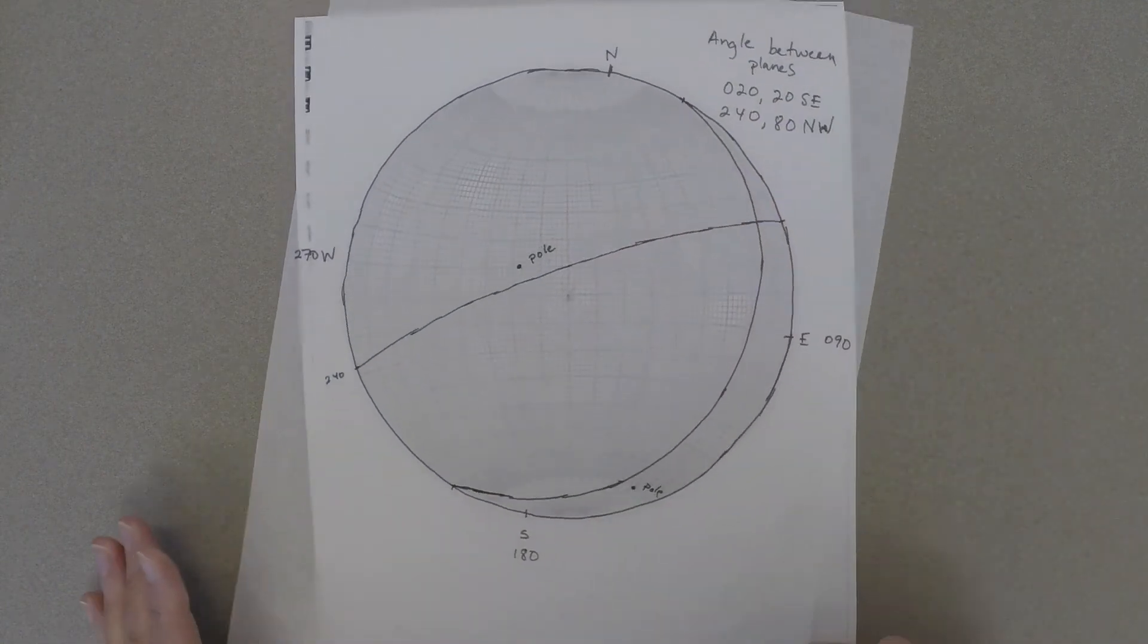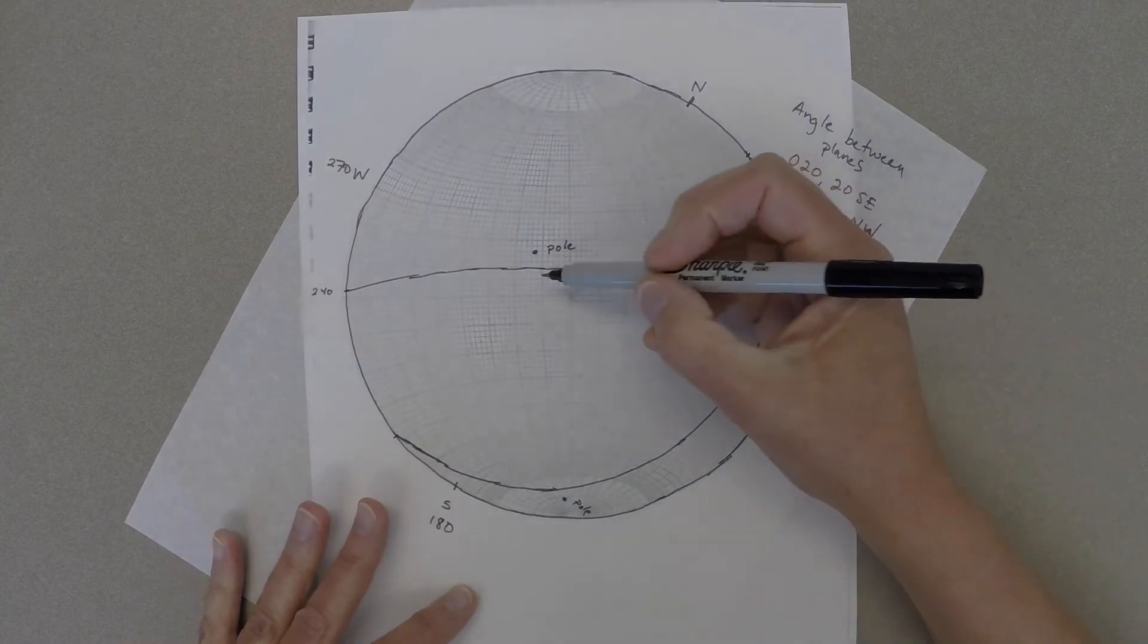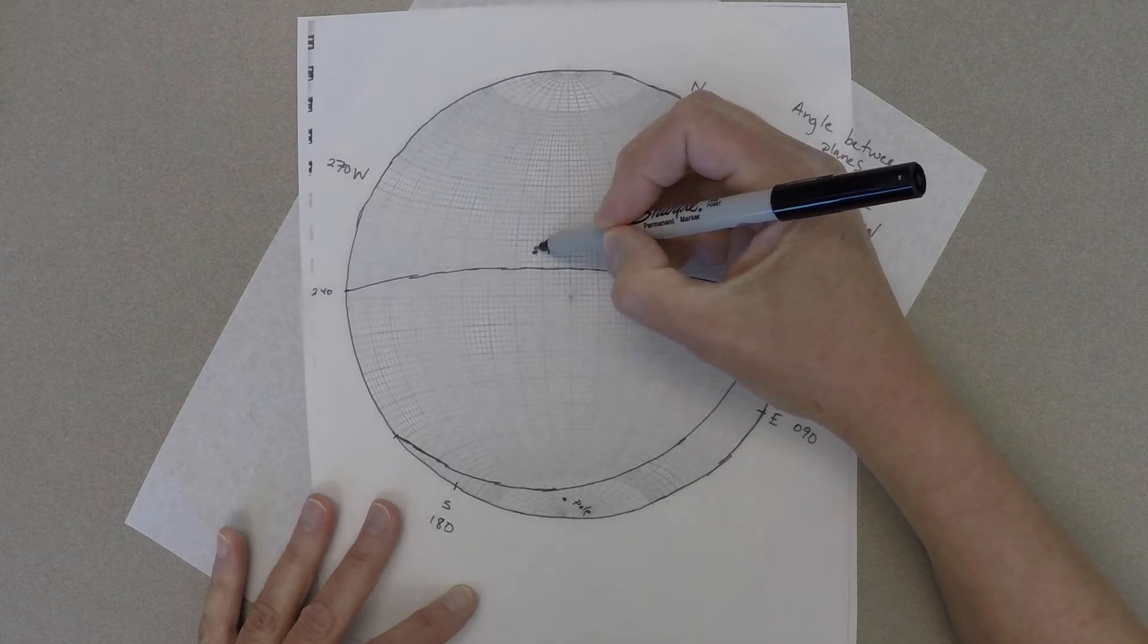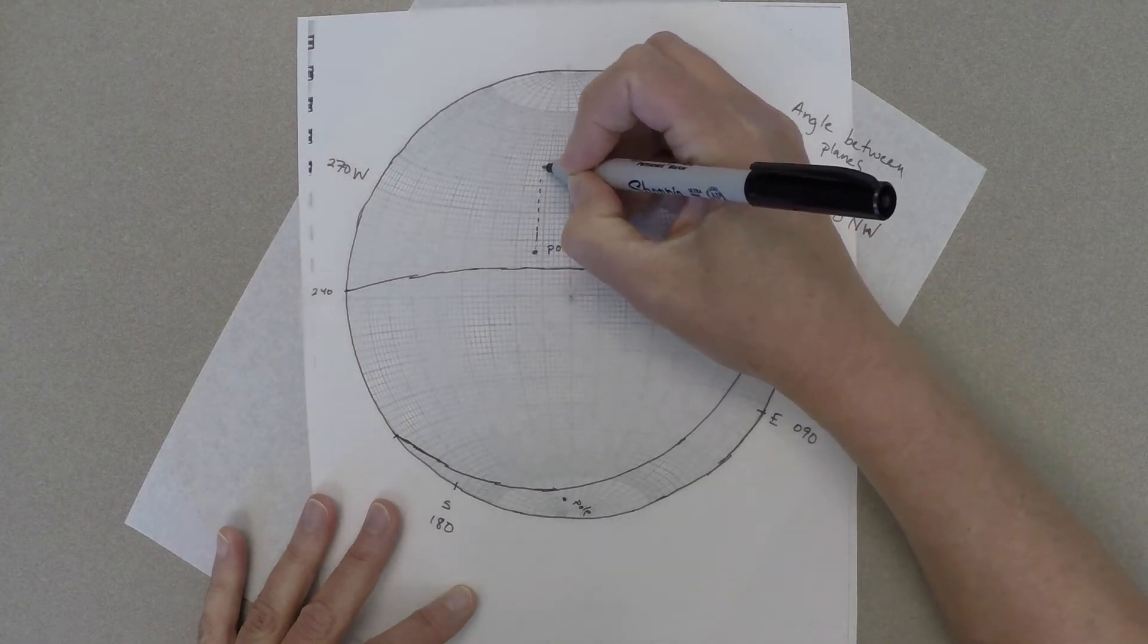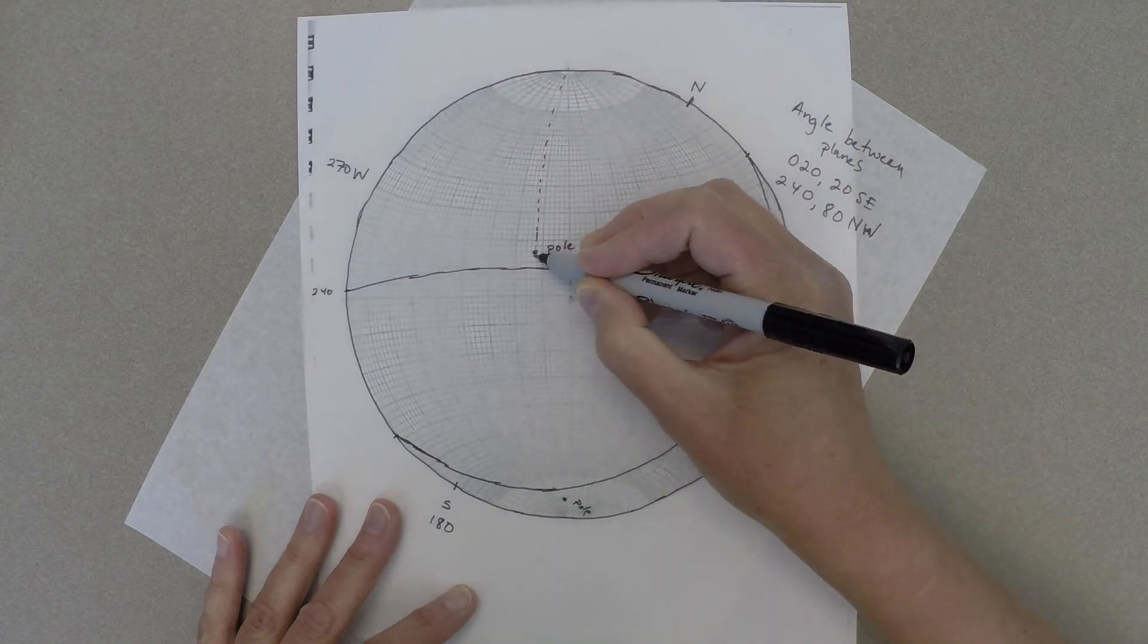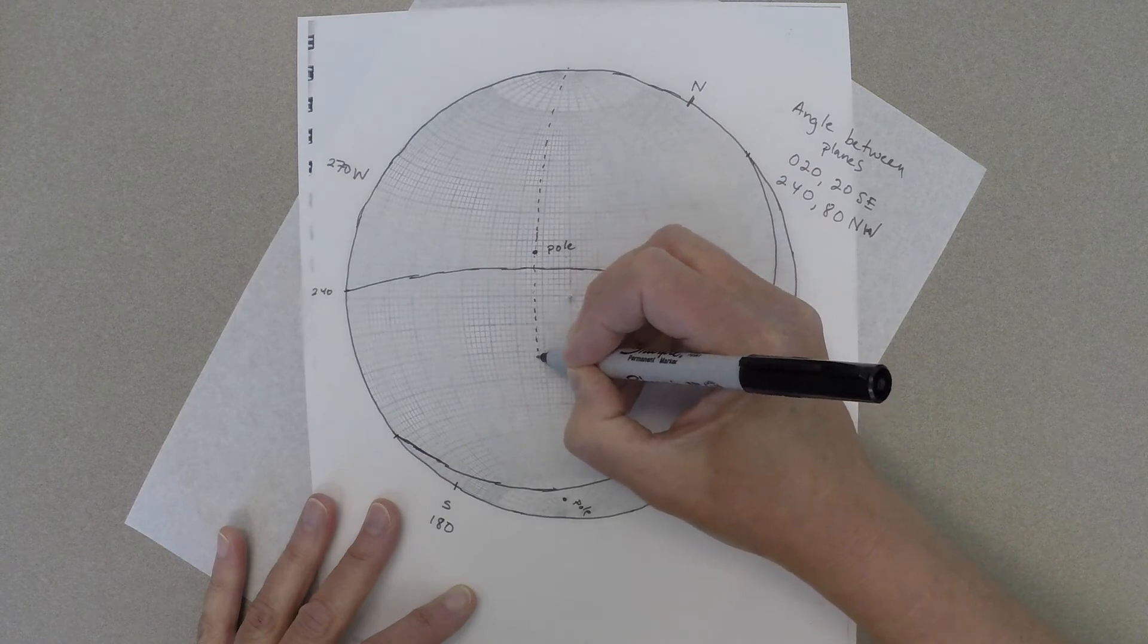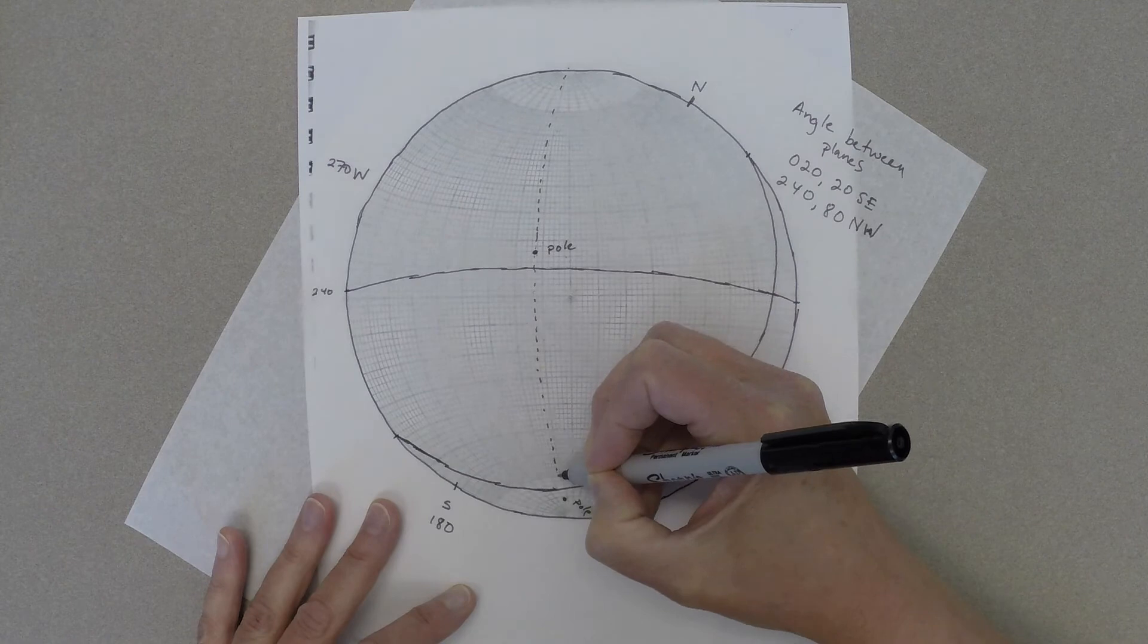Then to measure an angle between these two dots, we're going to line both of those dots up so they lie on the same great circle. And you can trace the great circle that contains those. This great circle, by the way, is also a plane that's perpendicular to both of the two planes that we've plotted. So it's kind of a special orientation you might be interested in for other reasons.